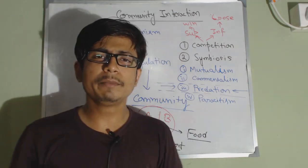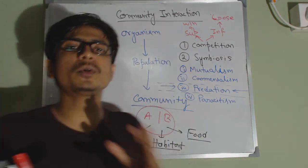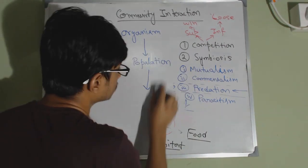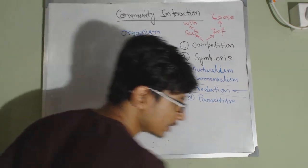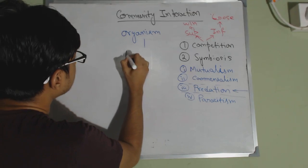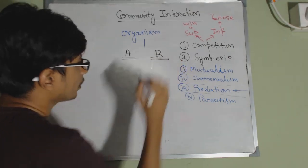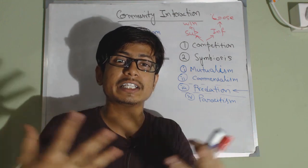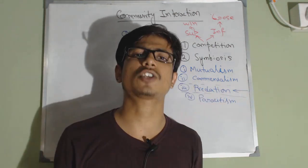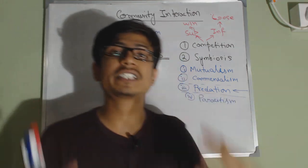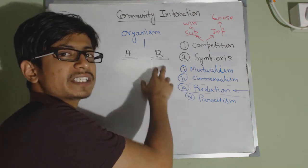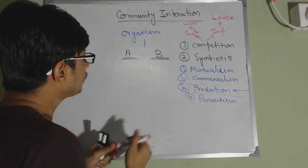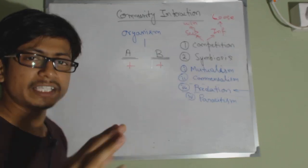In mutualism, two communities have a mutualistic understanding between themselves. Both of them get benefits due to their interactions. Species A and species B follow a positive interaction — species A helps species B and species B helps species A. We can put a plus for both of them. That is mutualism.